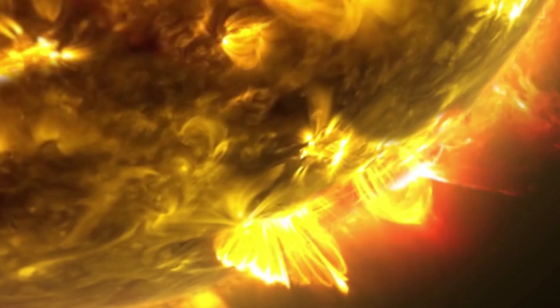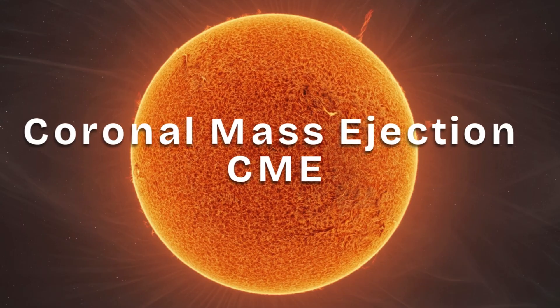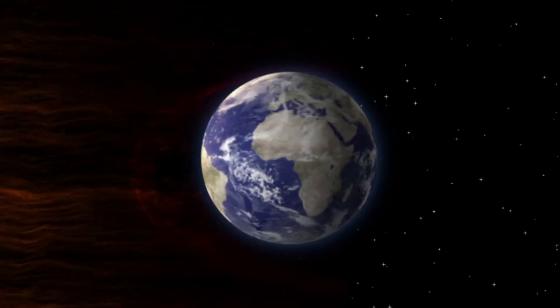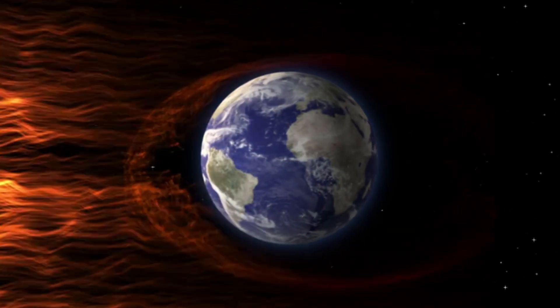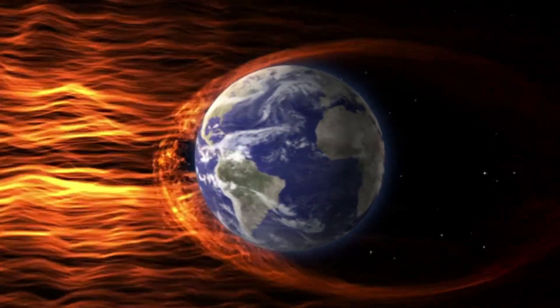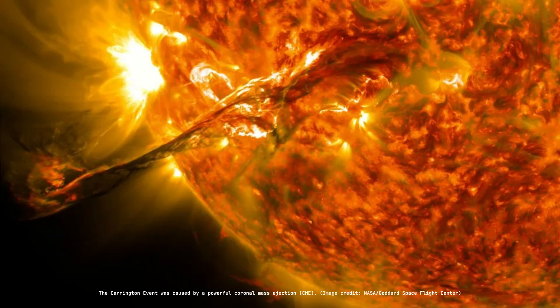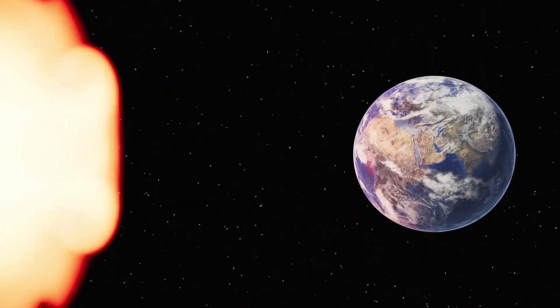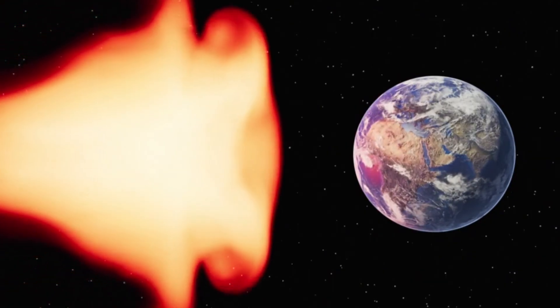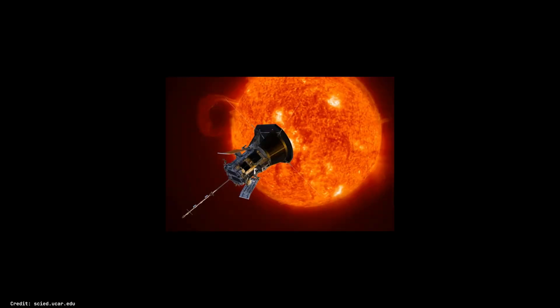Now imagine the sun just hurling a giant bubble of plasma and magnetic energy straight into space, like a cosmic cannonball. That's a CME, or coronal mass ejection. These solar eruptions can blast through space at millions of kilometers per hour. And if one slams into Earth, buckle up. It can mess with satellites, blackout power grids, and fry communication systems. Back in 1859, a massive CME called the Carrington event lit up the skies with aurora all the way down to Cuba and wreaked havoc on the telegraph system. If that same thing hit us today, we're talking trillions of dollars in damage. That's why scientists are watching the sun like hawks, trying to predict when the next big one is coming.